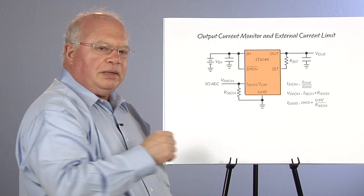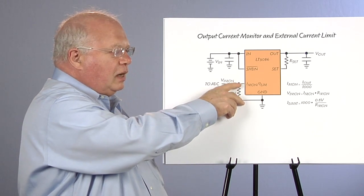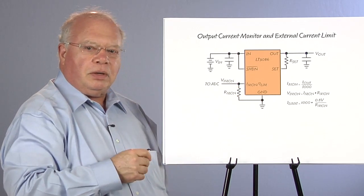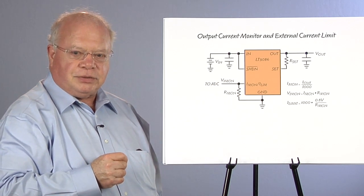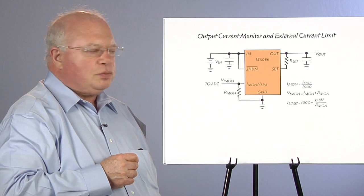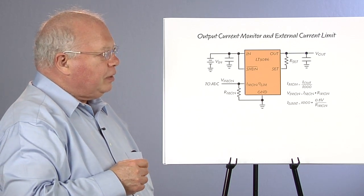So if you want a current limit at a low current, you make this a high value resistor. If you want a fairly high current, this becomes a lower value resistor. So you can monitor as well as control the output current of the device.